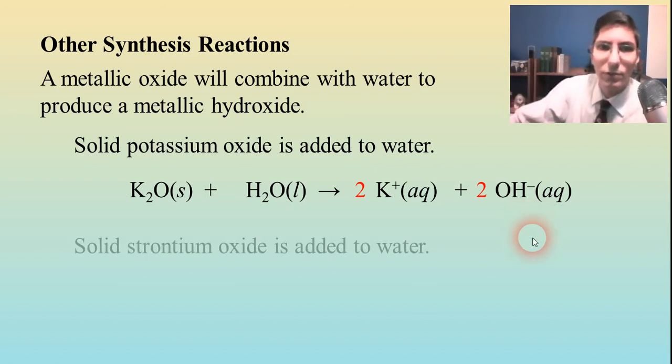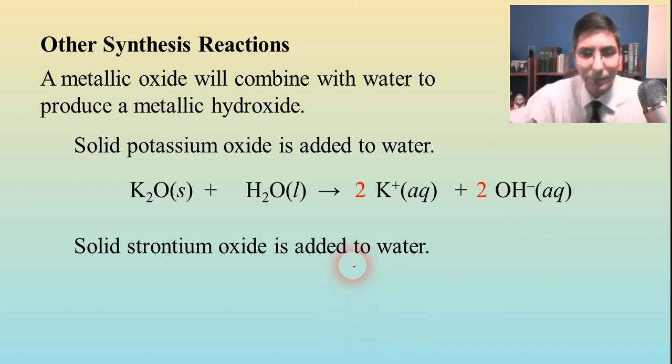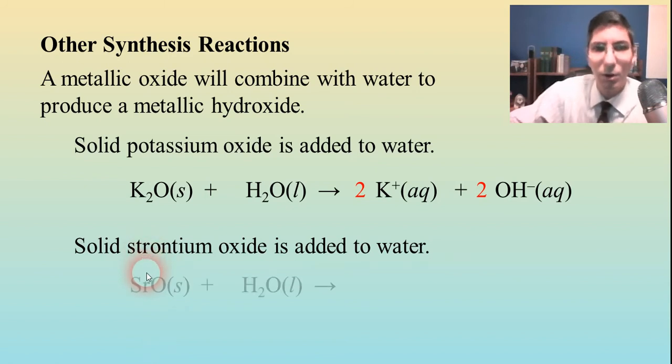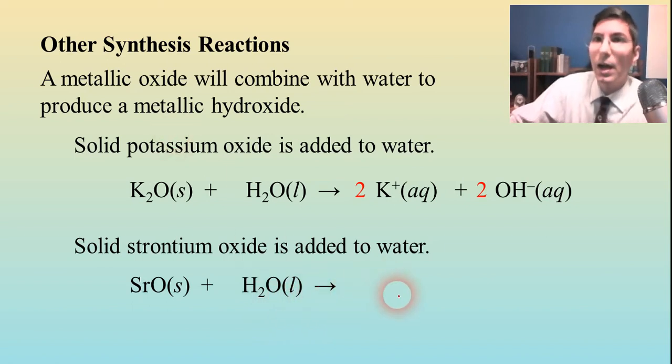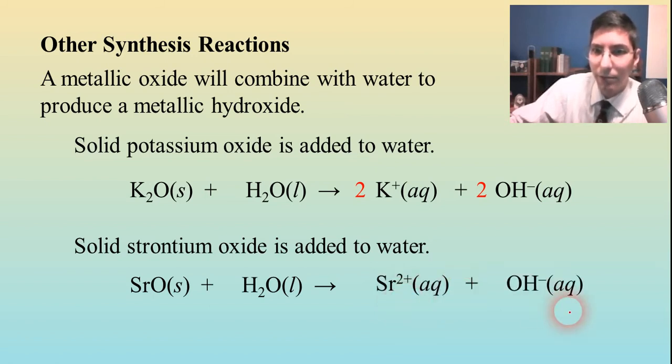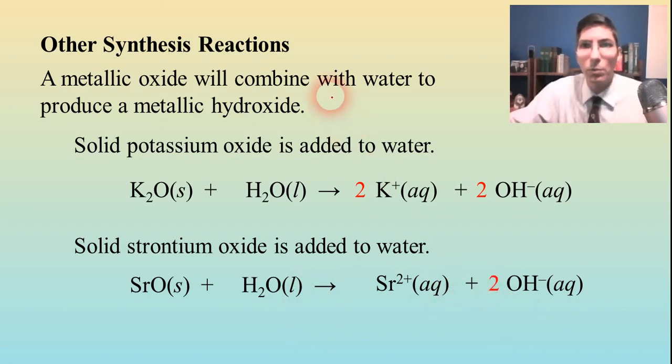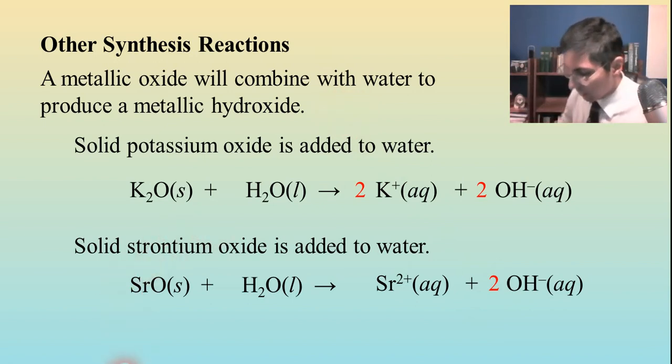Let's try another example: strontium oxide is added to water. We have strontium oxide, SrO, added to water. What's the product going to be? The metallic hydroxide, strontium hydroxide. We write that in its ion form: strontium and hydroxide. Let's make sure this is balanced. I think the easiest way to balance that is put a two in front of the hydroxide, and now it's balanced. That's one of the rules you need to know.